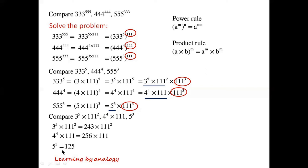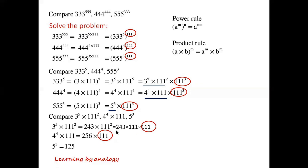You can see that 125 is the smallest of the three numbers. Now we have to compare the first two numbers, which have a common factor of 111. So we can write the first number as 243 times 111 times 111, meaning comparing the two numbers is equivalent to comparing 243 times 111 and 256. Clearly, 243 times 111 is greater than 256.